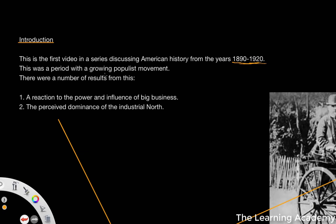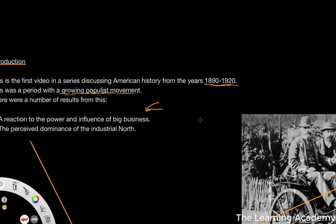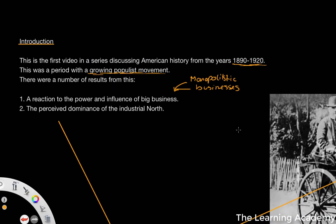This was a period of growing populist movement, and there were a number of results from this growing populist movement. There was a reaction to the power and influence of big business. If you remember in the last video, we looked at chapter 1 — the era of the Gilded Age — and we find that there are a lot of monopolistic businesses, where a business has complete control of a particular market. They are the only company or business that creates commodities for that particular market, and so that stifles competition.